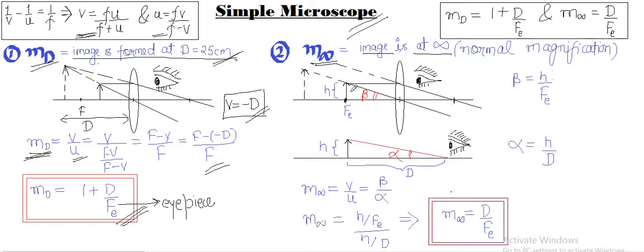You can see that one ray will pass through the focus, the other will pass undeviated. The final image will be huge and it will be at infinity. At v equals to infinity, we cannot calculate the magnification using the basic formula v by u because v tends to go infinite. So we use another technique: we calculate magnification using the angle subtended by the image upon the angle subtended by the object.